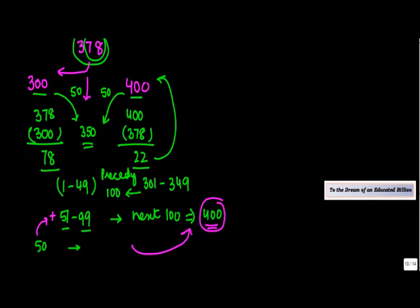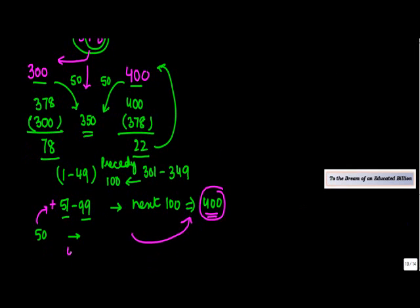So, let's say for example, if I take two questions, I tell you 479, which is the closest hundred? The end two numbers is 79. 79 falls in the next one. So, we round it off to the next hundred, which is 500.